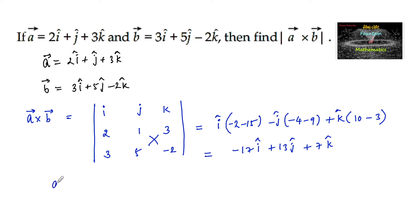So a cross b is equal to minus 17i plus 13j plus 7k.